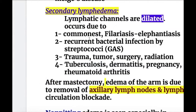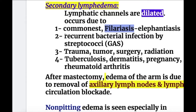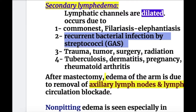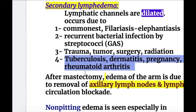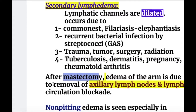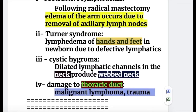In secondary lymphedema, the lymphatic channels are dilated, whereas in primary lymphedema there was agenesis, hypoplasia, or lymphatic obstruction. The most common cause of secondary lymphedema is filariasis, causing elephantiasis. Another common cause is recurrent bacterial infection by Group A streptococcus. Trauma, tumor, surgery, and radiation may also cause secondary lymphedema, as can tuberculosis, dermatitis, pregnancy, and rheumatoid arthritis. After mastectomy, edema of the arm is due to removal of axillary lymph nodes and lymph circulation blockage. Damage to the thoracic duct after malignant lymphoma or trauma can also cause lymphedema.